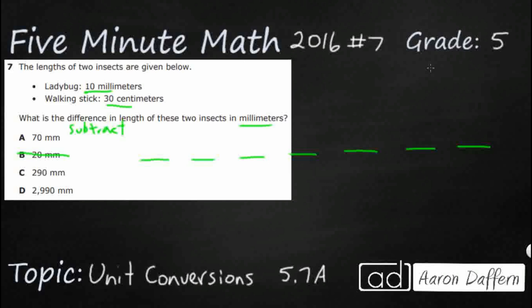Because the metric system is based on tens, we can use it as another way of thinking of place value. So King Henry died by drinking chocolate milk. Let's start here. By - this is going to be our base unit. I always start here because this is kind of like our ones place. This is either going to be our grams, liters. In this case, we're going to be dealing with meters because we're dealing with length.